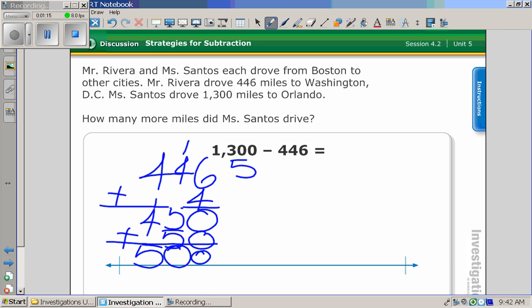500 plus 500 is 1,000 plus 300. It's 1,030. It's a different color now.